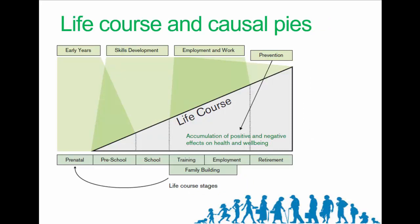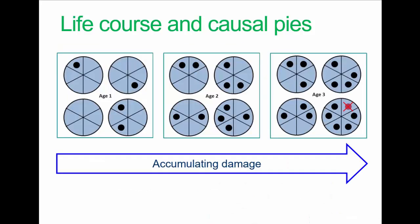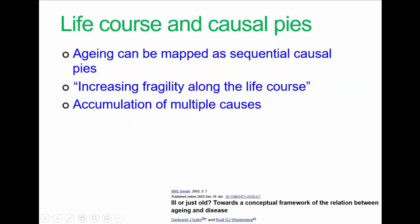Causal factors are likely to accumulate over the course of a lifetime, which brings us back to the life course model. The point is that damage, at least potentially, accumulates with age. At age one there may be one or two causal factors. In middle age, more of the factors have impacted. In elderly people, many more factors have impacted, including some which may lead directly to disease. The point is: damage accumulates.